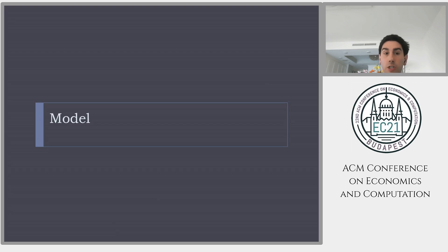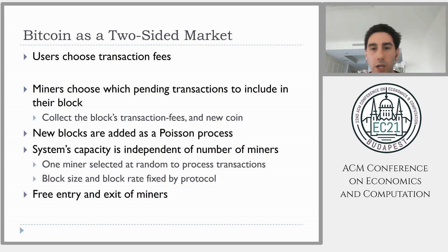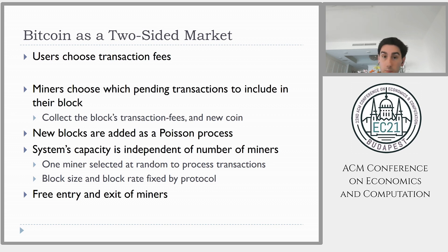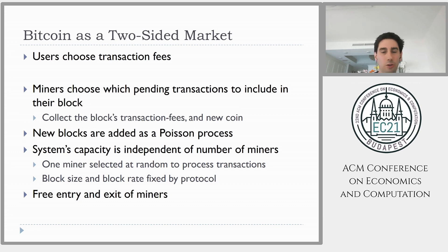In order to do this analysis, we need to take the distributed protocol and translate it into an economic model. Here are some highlights of the main features of the Bitcoin protocol that we translate into our economic model. Some of those are very fundamental to the distributed system design and hard to change; some are more of a design choice. There are a lot of variations in future protocols and future coins, and all of this space is going through tremendous evolution.